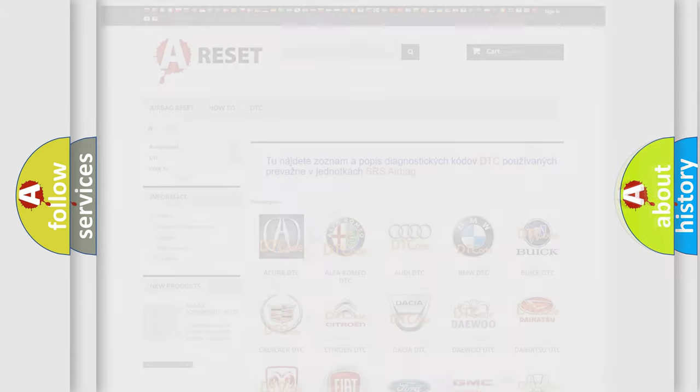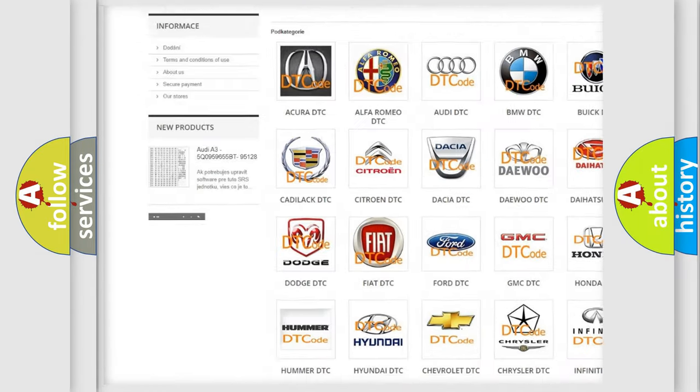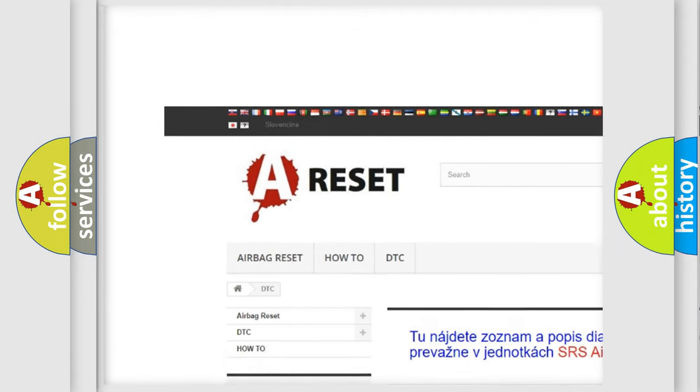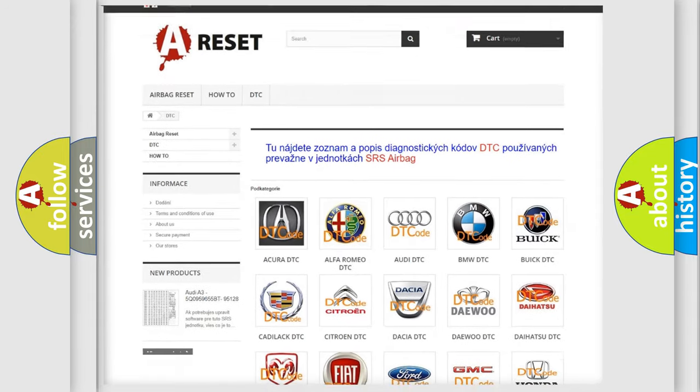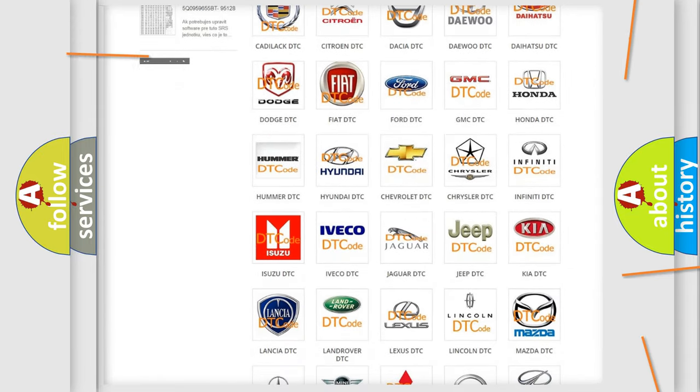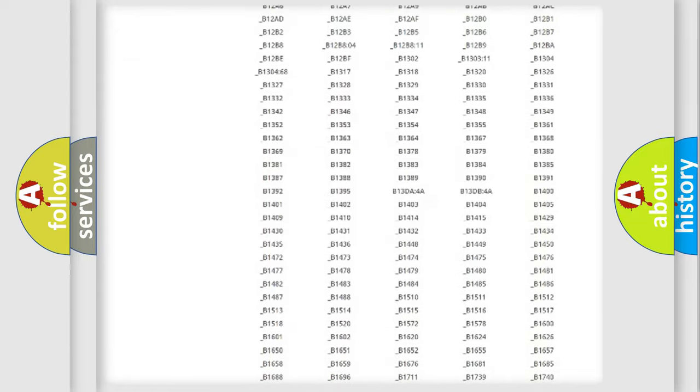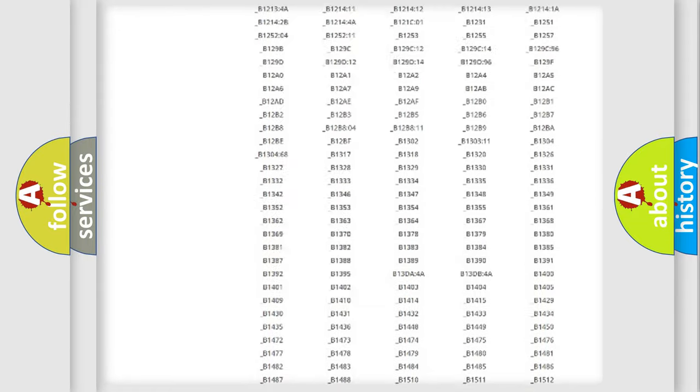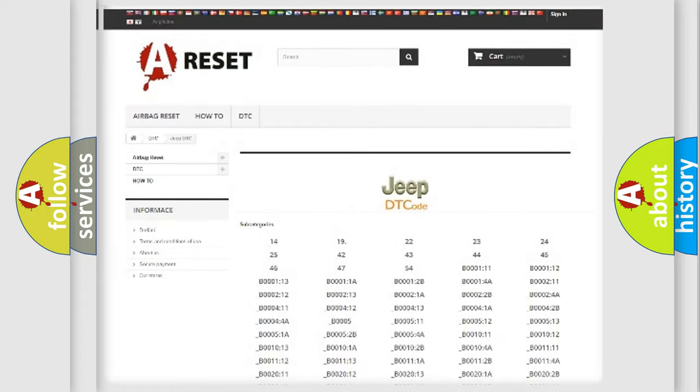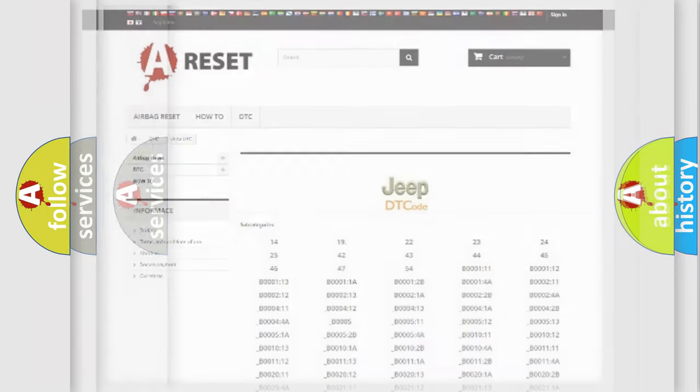Our website airbagreset.sk produces useful videos for you. You do not have to go through the OBD2 protocol anymore to know how to troubleshoot any car breakdown. You will find all the diagnostic codes that can be diagnosed in Jeep vehicles, and many other useful things.